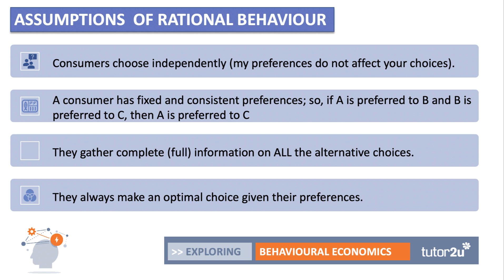A quick look at some of the assumptions of rational behaviour. The first assumption is that consumers choose independently. So my preferences for a particular type of drink, or what type of food to order off a menu, or which film to go see — my preferences do not affect your choices. You make an independent choice.